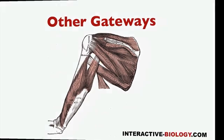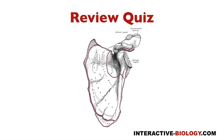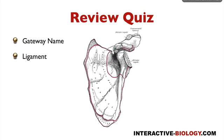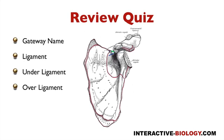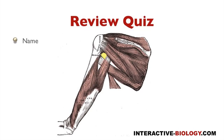Let's do a quick quiz. The suprascapular foramen has the transverse scapular ligament extending across it; under the ligament is the suprascapular nerve, and above or over the ligament is the suprascapular artery. The quadrangular space has a superior border of teres minor, inferior border of teres major, medial border of the long head of the triceps, and lateral border of the neck of the humerus. Its contents are the posterior humeral circumflex artery and the axillary nerve.